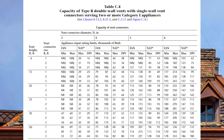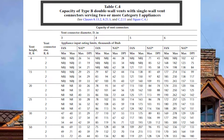Now compare that to table C4 on page 204 of your gas code: capacity of type B double wall vents with single wall vent connectors serving two or more category one appliances. Did you pick up on the nuance? C3 is for double wall vent connectors; C4 is for single wall vent connectors. That is the only difference, but it will affect your sizing.